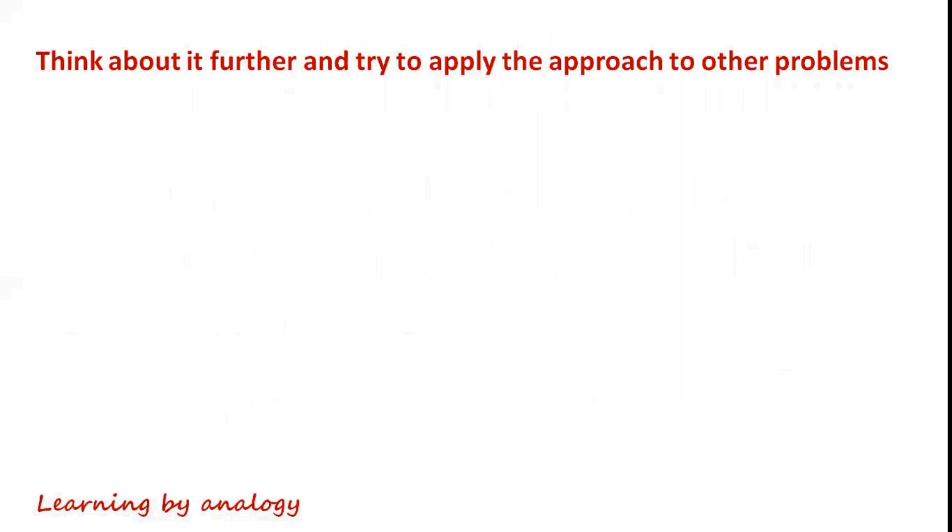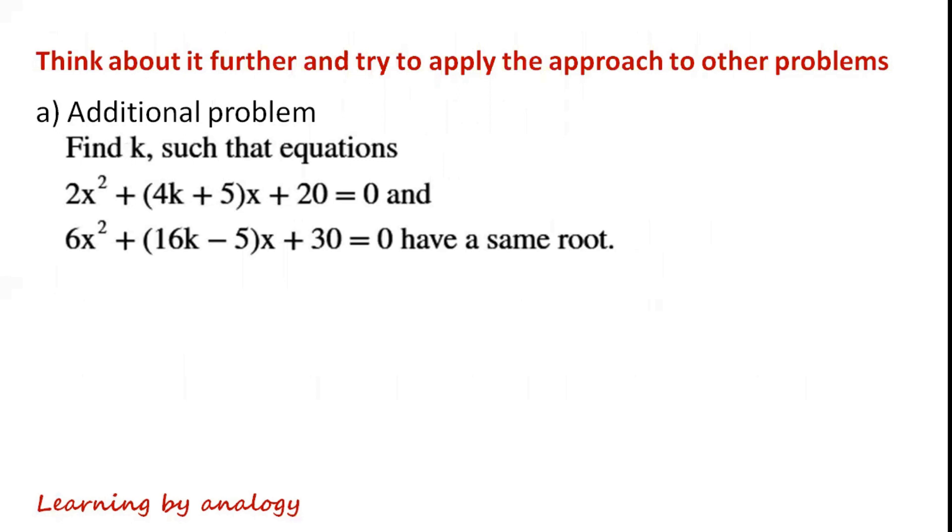Think about the thought process for the previous question further and try to apply the approach to other problems such as this one. Find k such that the equations 2x squared plus 4k plus 5 times x plus 20 equals 0 and 6x squared plus 16k minus 5 times x plus 30 equals 0 have the same root.